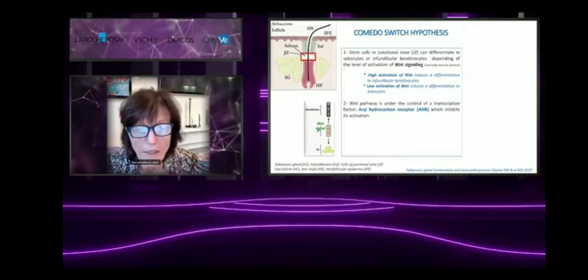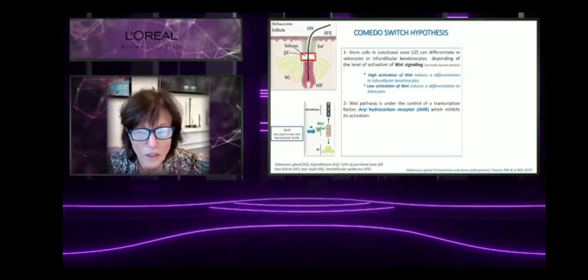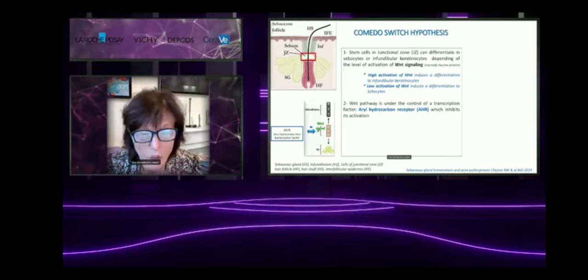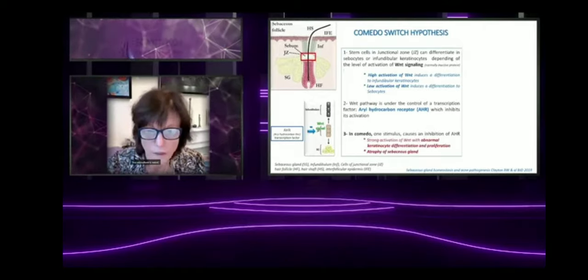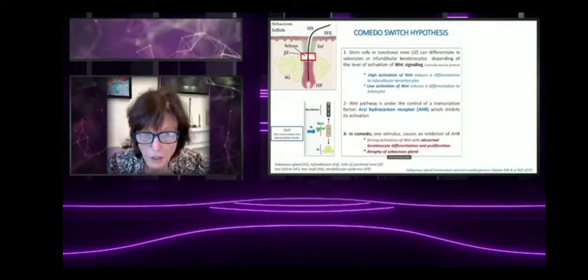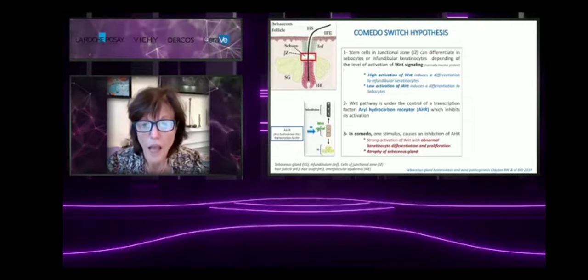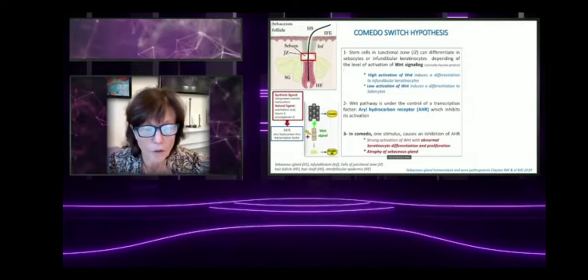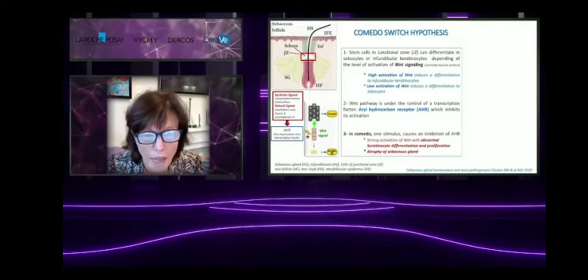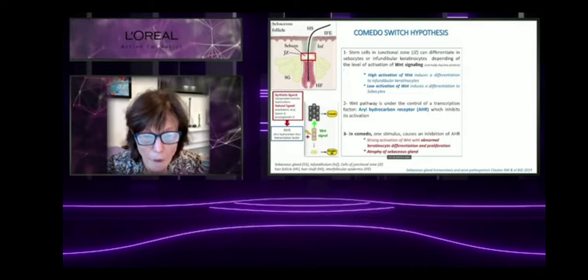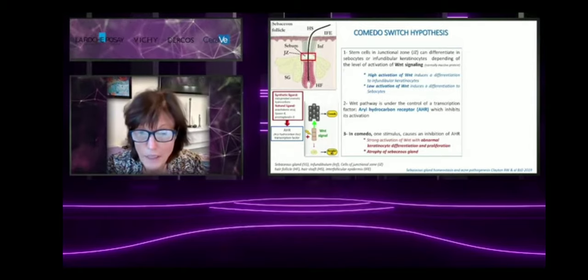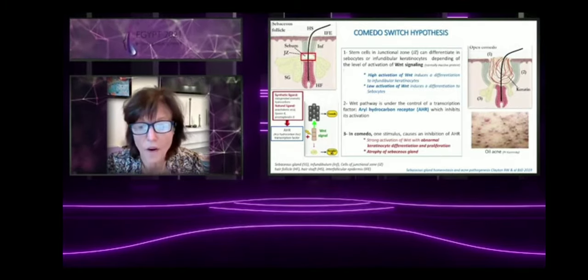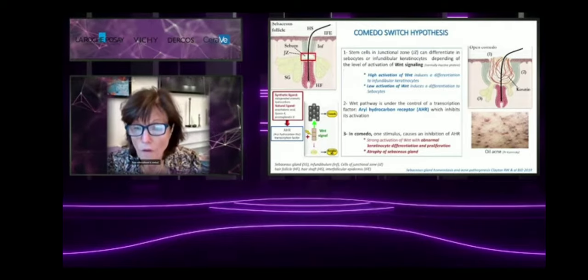What we know today is that the control of the Wnt signal is under AHR receptor, which is a negative control. It inhibits Wnt signal. In the comedone, we know that we have a strong activation of Wnt signal, abnormal proliferation of keratinocyte and differentiation with an atrophy of sebaceous gland. And now we have identified some factors which are able to activate this AHR receptor, which means it is of particular interest for treatment. Here you have the example of chloracne. Chloracne is induced by the activation of this transcriptor factor.